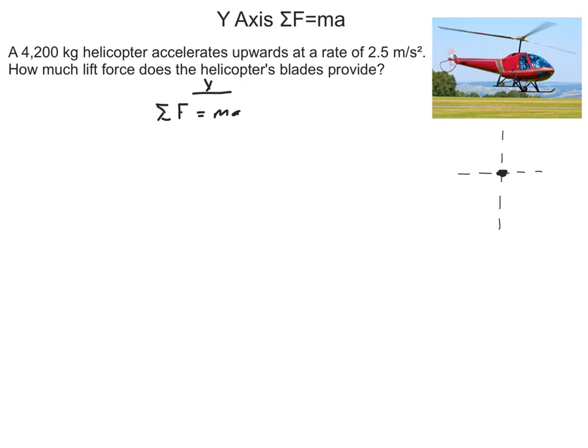In this problem I have a lift force going up and I have gravity going down, and I'm going to draw the lift force to be a little bit bigger than gravity. The main reason for that is the helicopter is accelerating upwards, so the lift force must win. So the very first thing, as always, draw a free body diagram.